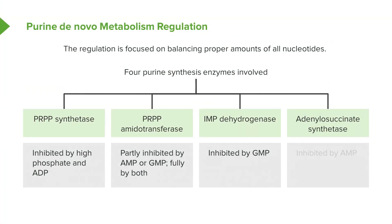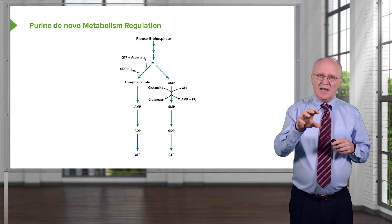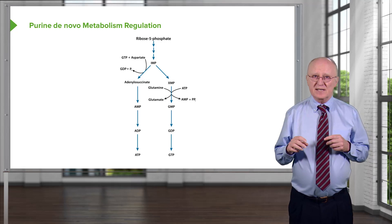The enzyme catalyzing the reaction in the direction of the adenosine nucleotides, adenylosuccinate synthetase, is inhibited by — you could probably guess it — the end product AMP. So we start to see that there's an important balance happening between the relative amounts of the guanine nucleotides and the adenine nucleotides. Let's step back and look at that pathway from the perspective I gave you originally and see how this plays out.